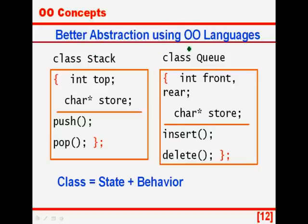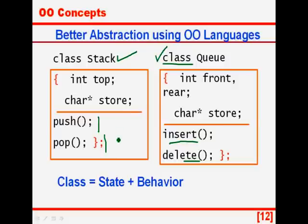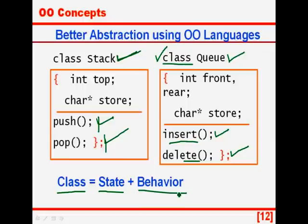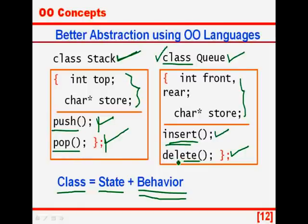Let us see how we can get better abstraction using an object oriented language. Here we see a stack where the pop and push functions have been pushed into the class, and similarly the insert and delete functions of the queue are pushed into the envelope of the class queue. With this information the compiler knows these two functions belong explicitly to stack, and insert and delete belong explicitly to the queue ADT. Now if I try to use insert on a stack or push on a queue, the compiler can give an error. So we say that a class is the definition of state and behavior. The state is defined by data members — the top and character store for stack, and the front, rear and store for a queue. The behavior is defined by the operations or functions — push and pop for stack, insert and delete for the queue.